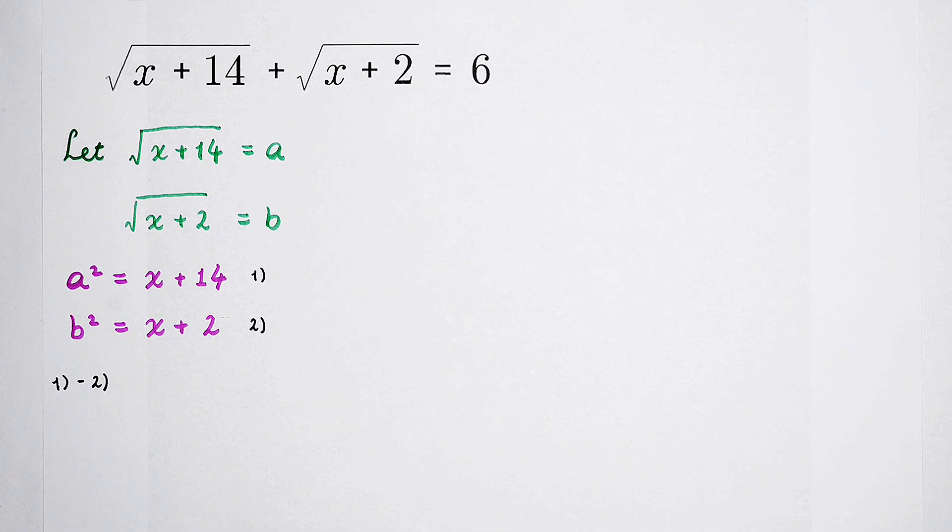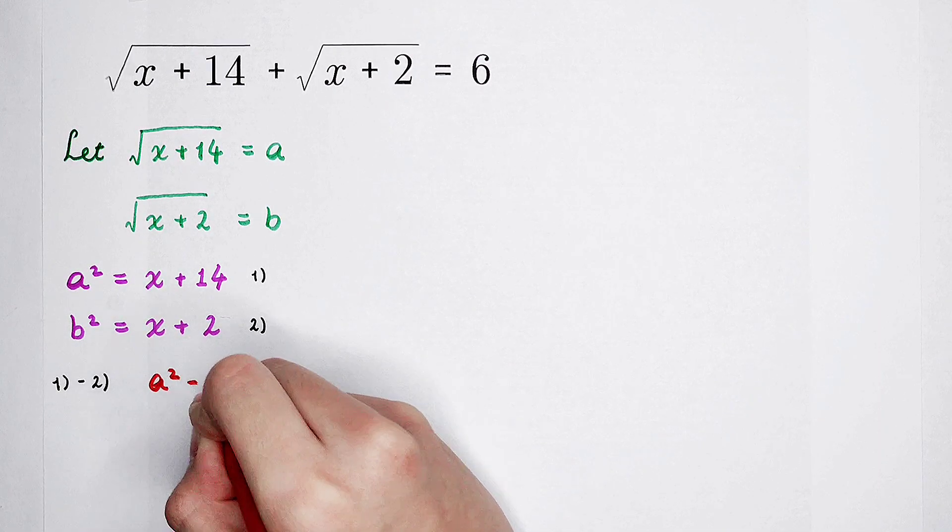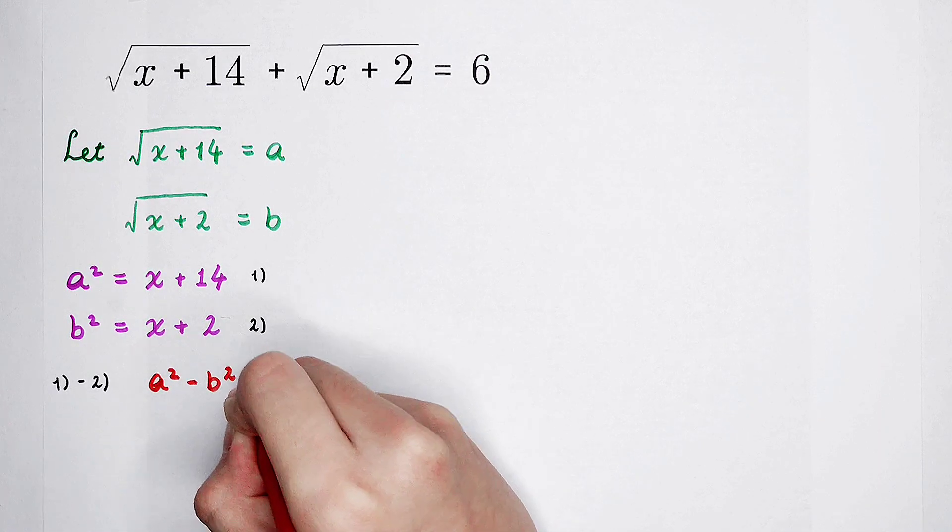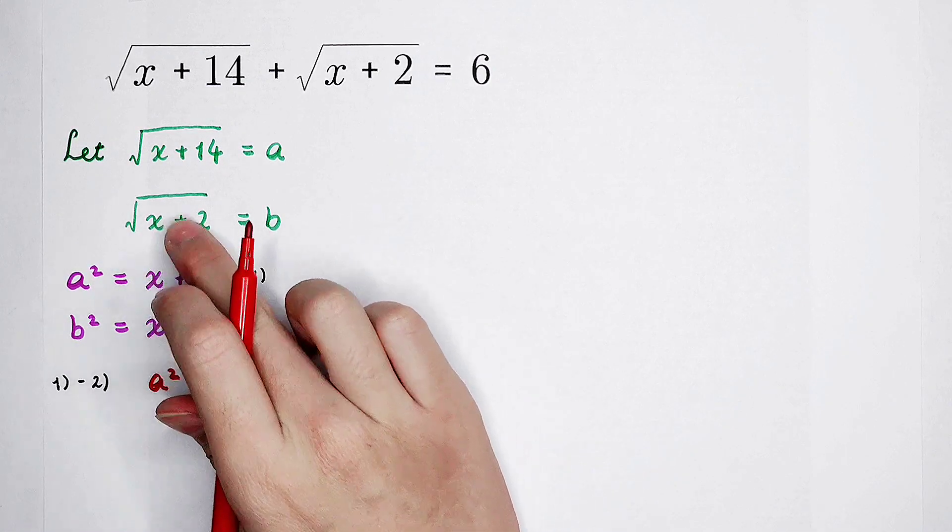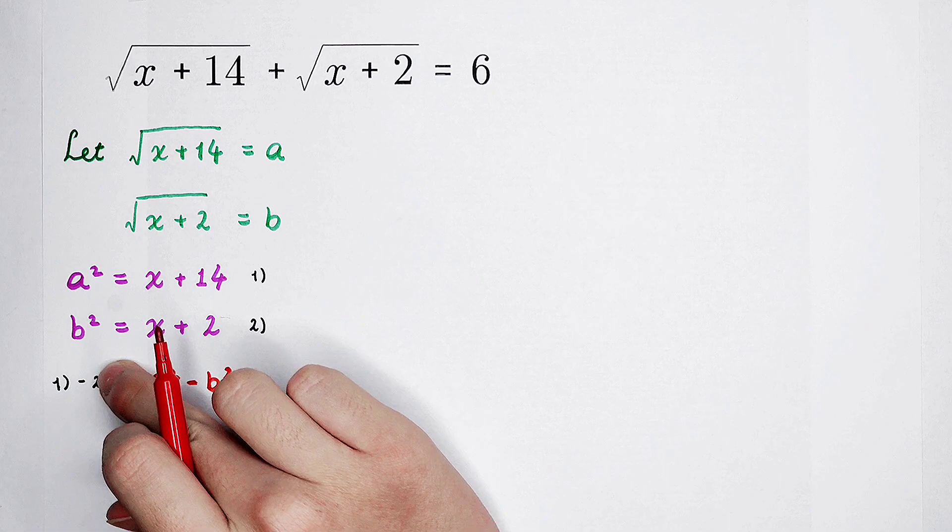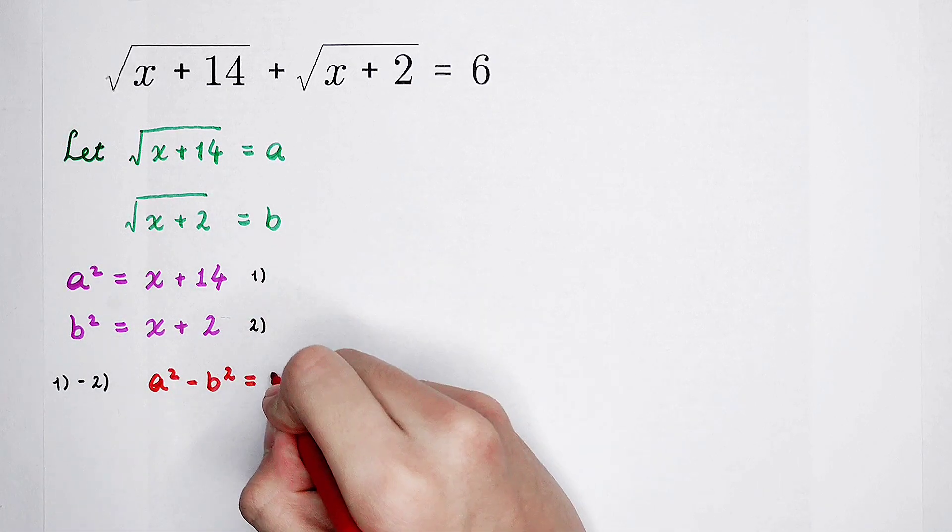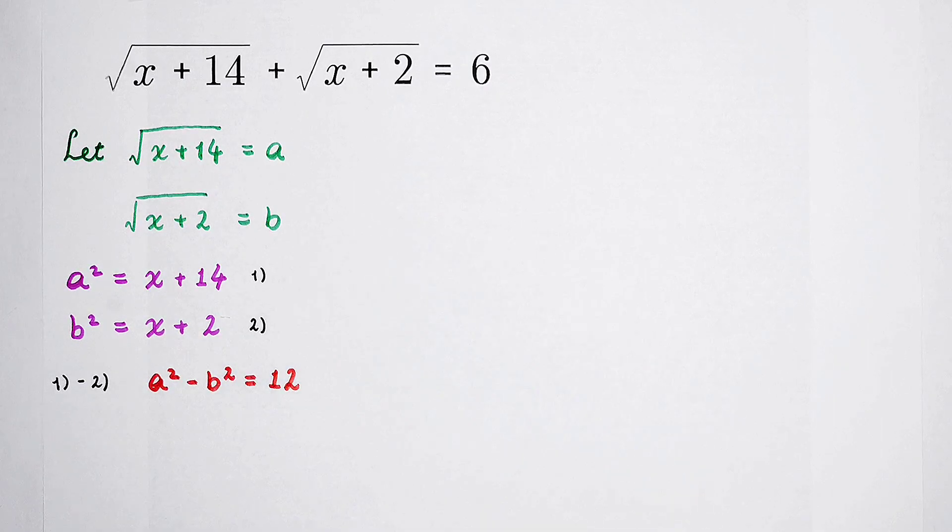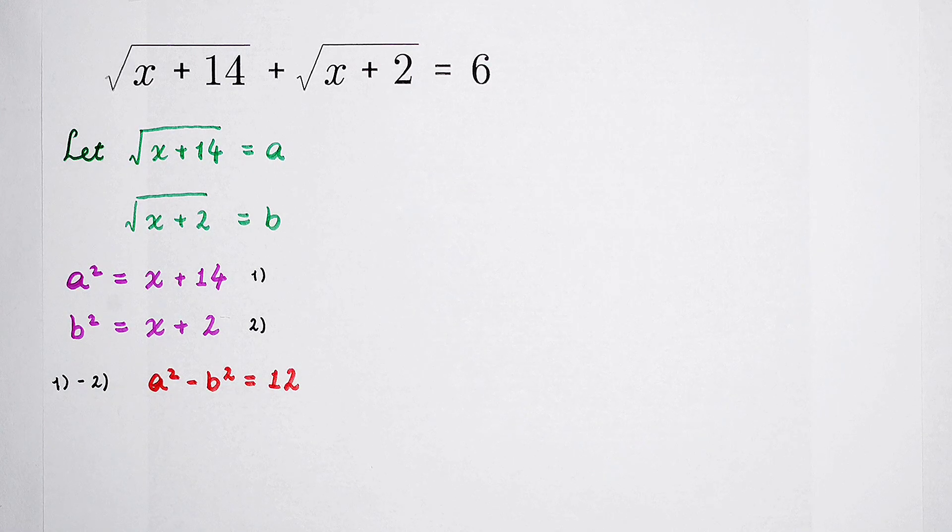So, if the first one subtract the second one, what can we get? A squared minus b squared is x plus 14 minus x, then minus 2. Positive x, negative x, they can be canceled. And 14 minus 2 is 12. Of course, there is also the other relationship between a and b. That is, the sum of them is 6.